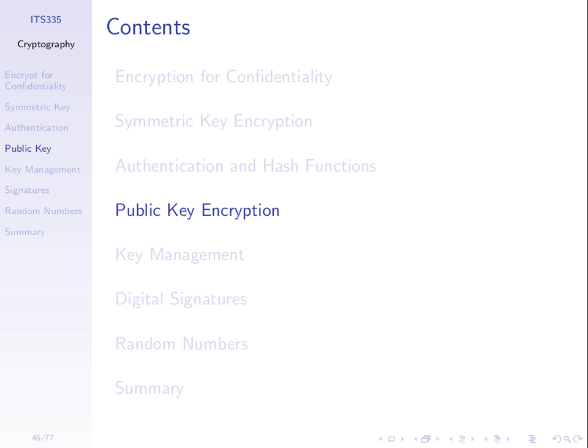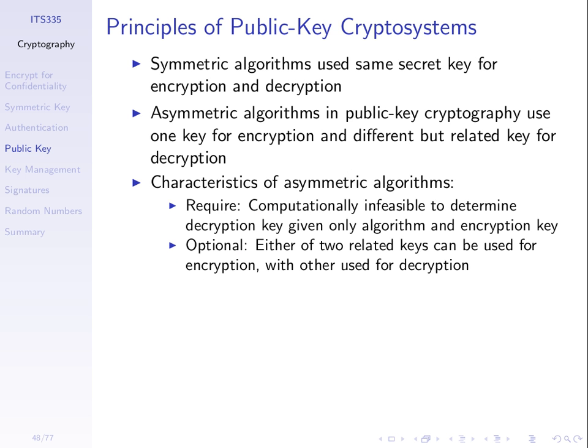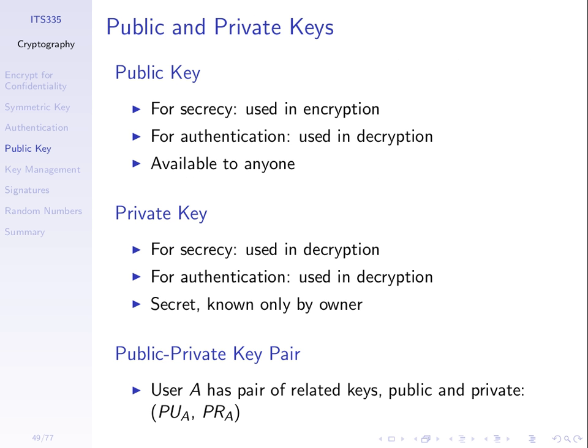We got onto public key encryption, where we have a public and a private key. Each user has their own public-private key pair, and we use algorithms such that if we encrypt with one key, we can only successfully decrypt with the other key in the key pair. So if I take some message and encrypt it with my public key, the only way to decrypt the ciphertext is using the corresponding private key.